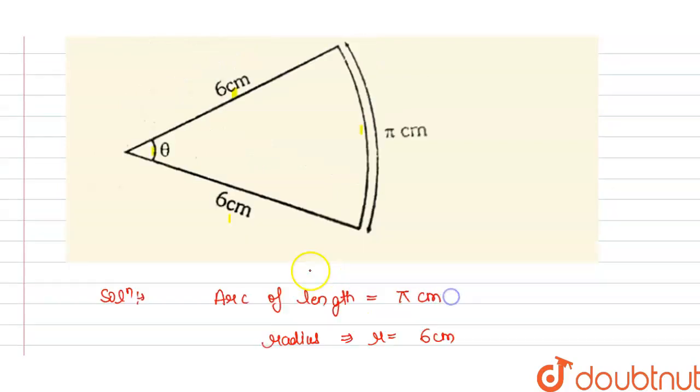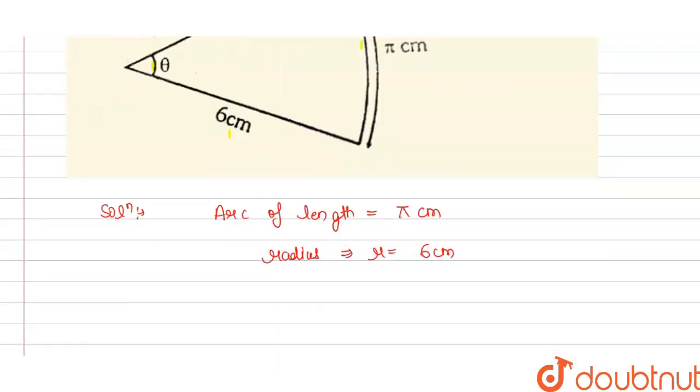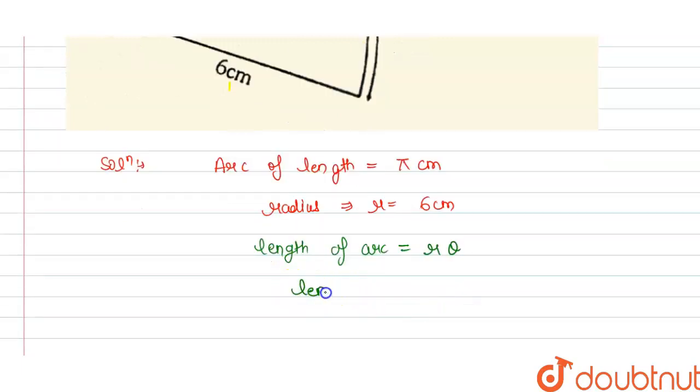So we have to find the angle θ, angle subtended θ, in degree and radian. So we know that arc, we can say that length of arc is equal to 6θ. We know that this is equal to 6θ, or we can say that this is equal to radius r into θ. So from this we can say